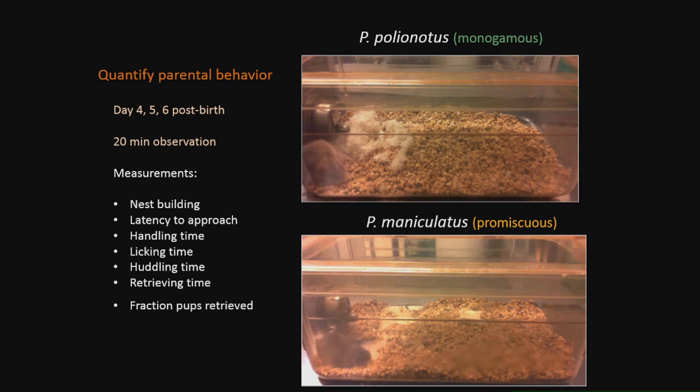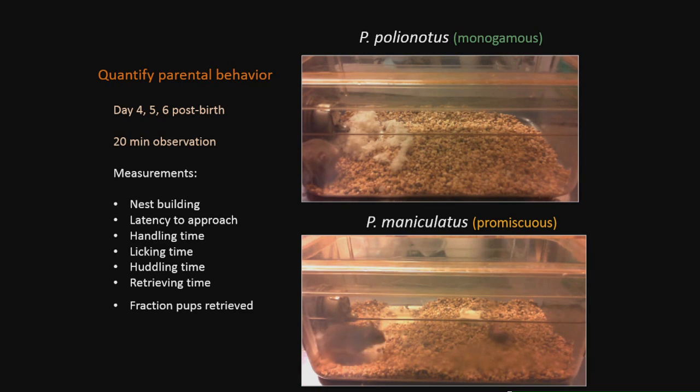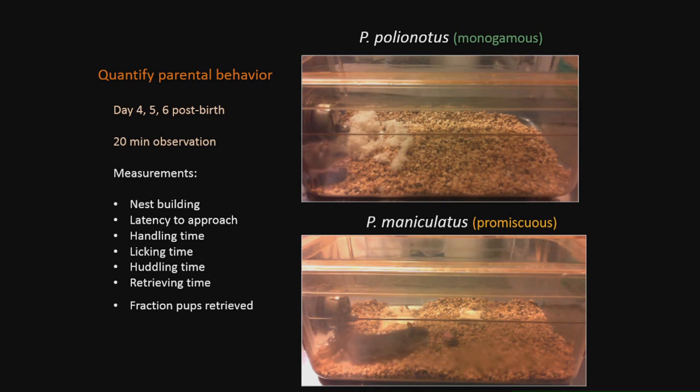By contrast, the dad from Peromyscus maniculatus — in a 30-minute observation period didn't do anything with its nest. The pup is introduced, it's sort of flailing around, getting cold, lonely. The dad watches, does investigate, handles the pup briefly, but pretty much for the rest of the trial sits seemingly scared in the corner and interacts very little with its pup. So here's what we call a good dad versus a bad dad.